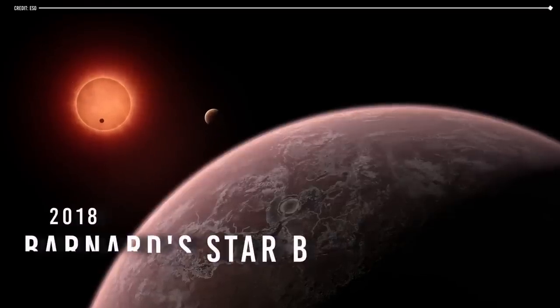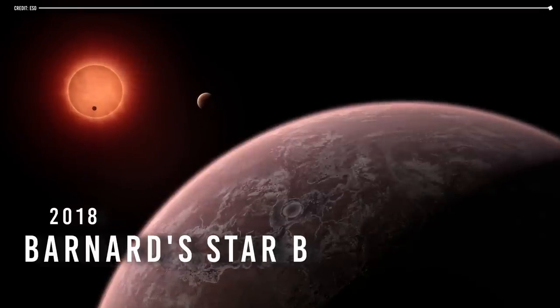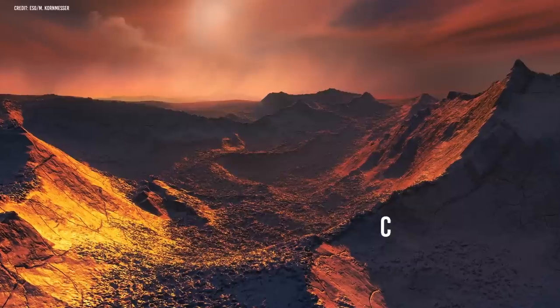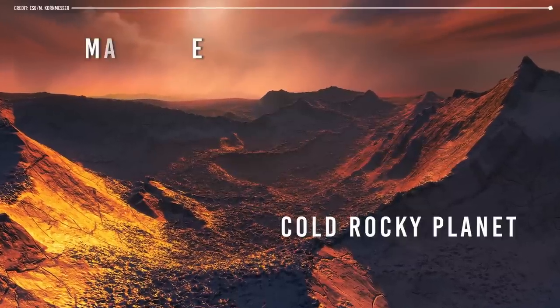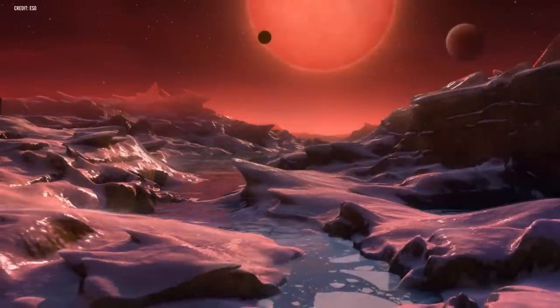In 2018, astronomers announced the discovery of a candidate planet orbiting Barnard's star named Barnard's star b, which is supposed to be a cold, rocky planet with a mass about three times that of Earth.